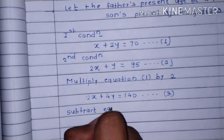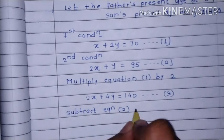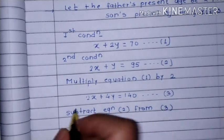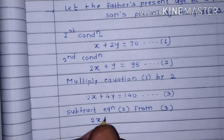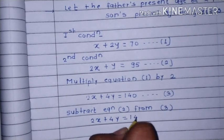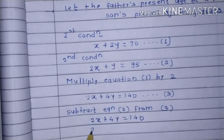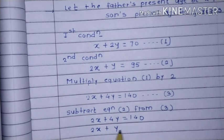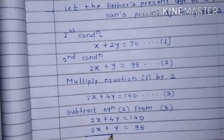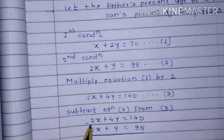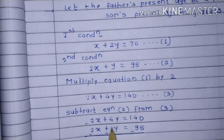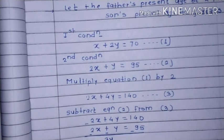Multiply equation 1 by 2 to get equation 3: 2x plus 4y is equal to 140. Equation 2 is 2x plus y is equal to 95. Subtract equation 2 from equation 3: 2x cancels, leaving 3y equal to 45.